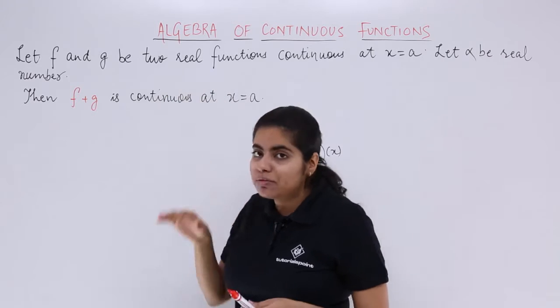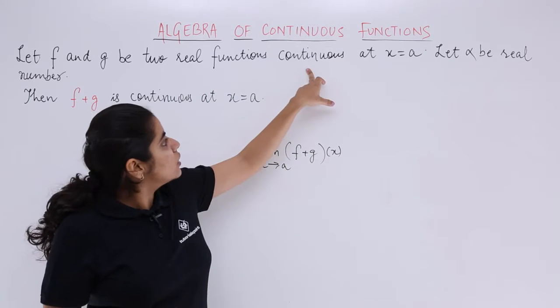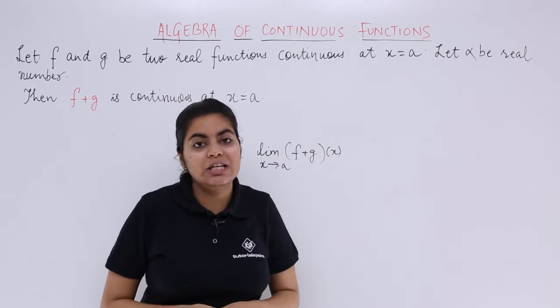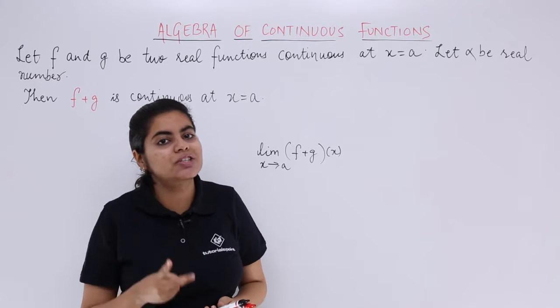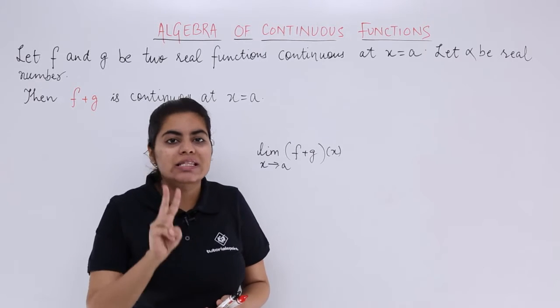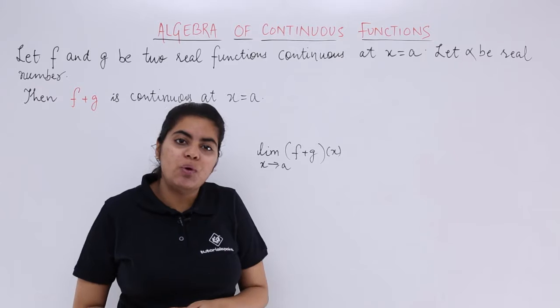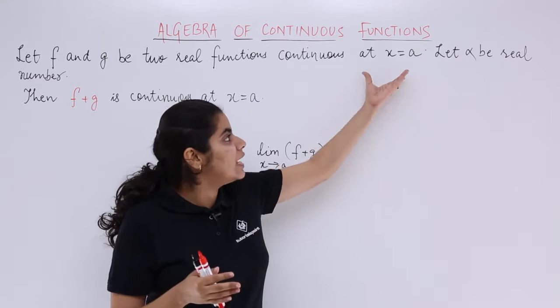Let f and g be two real functions continuous at x equals a. That means we have two functions, the first function is f, the second function is g, and they both are continuous when we have x equals a.